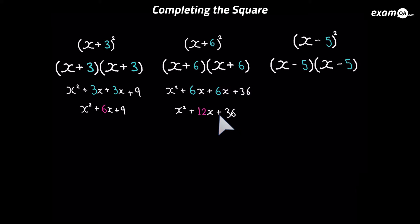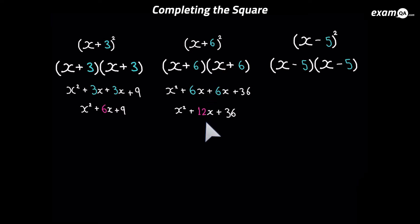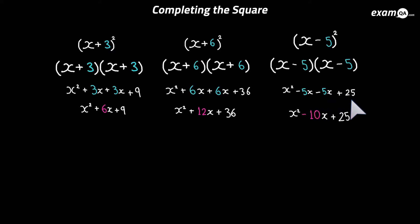Now I'd like you to pay attention to the number inside the squared brackets. In the first one, the number was three, and once we simplified it, the number in front of x was six. In the second one, the number inside was six, and the number next to x was 12. So there's a pattern — one is double the other. Whatever is inside the square brackets, once expanded and simplified, it gets doubled in front of x. The third one gives x squared minus 5x minus another 5x plus 25. Although they're both minus five, two negatives multiply to give plus 25. Simplifying: x squared minus 10x plus 25. The pattern you should notice is that one number is always double the other.